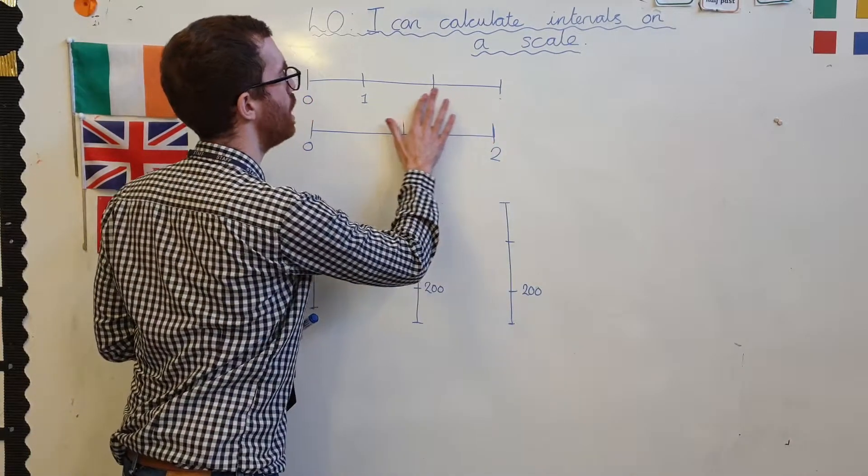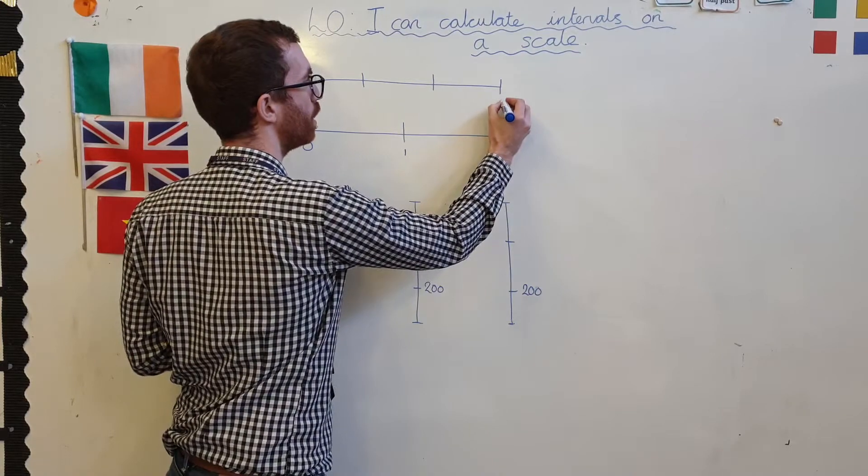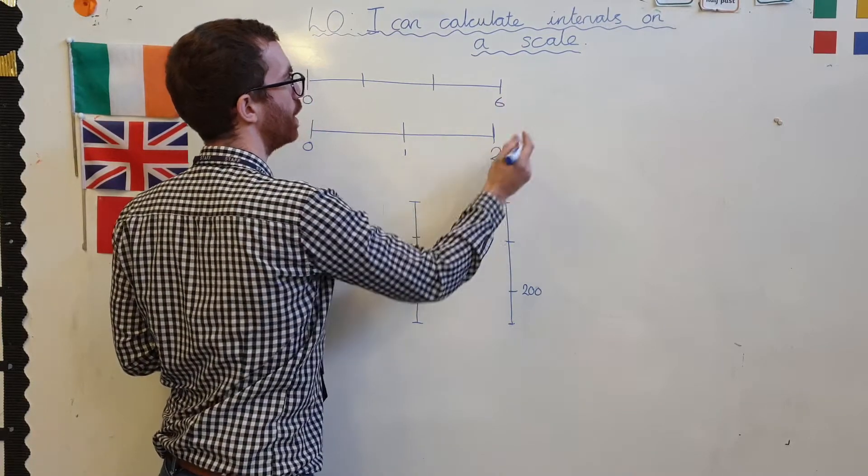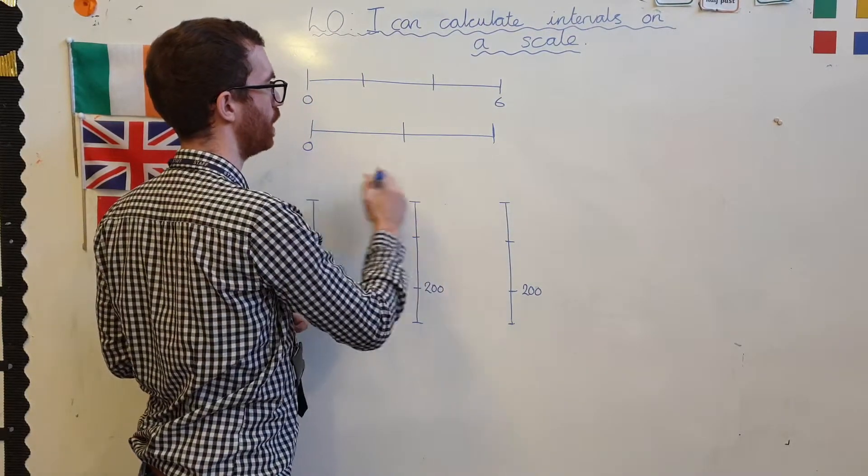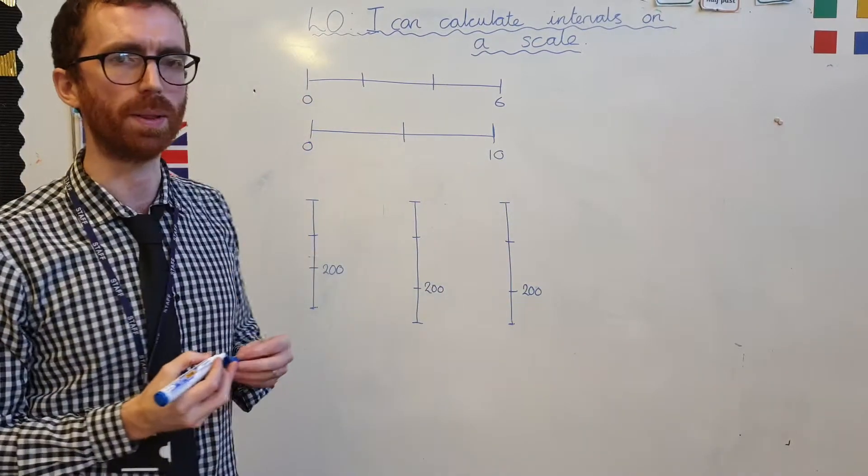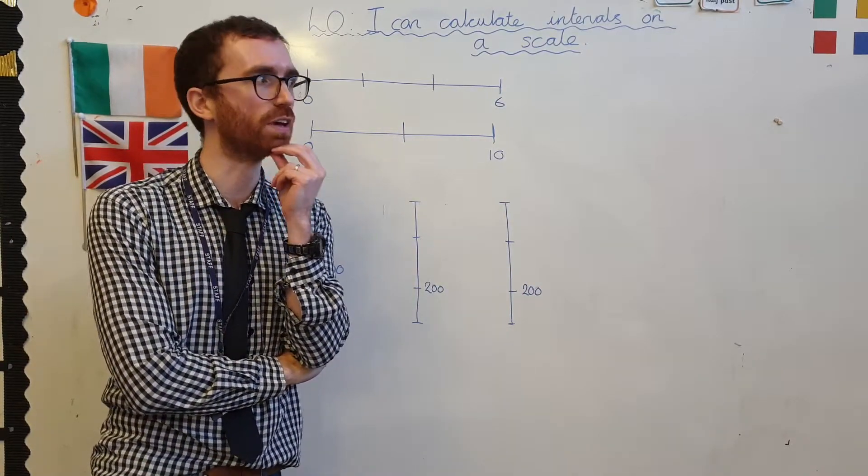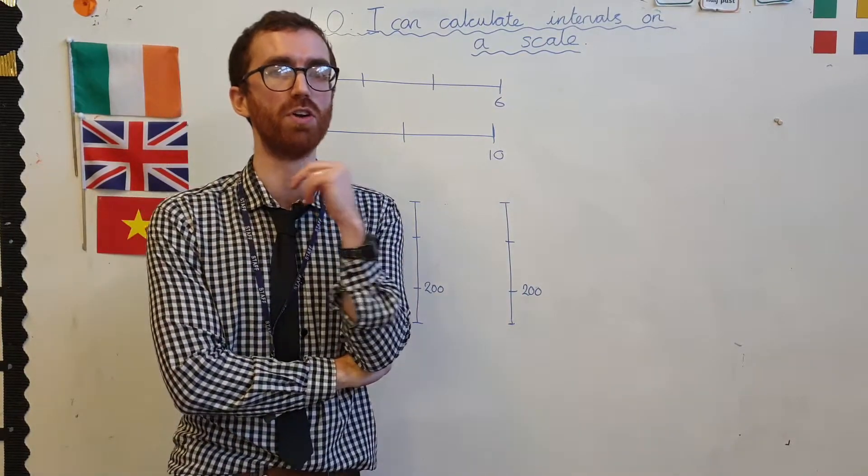But what if my numbers were a little bit harder? For example, up here, I might have a 6 down here, and do you know what? I'm going to have a 10. Let's start with this one. How on earth am I going to work out what that missing point on my scale is? What I'd like you to do is have a little discussion with your partner and pause the video now.